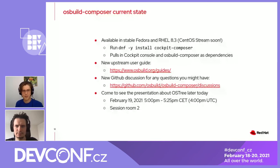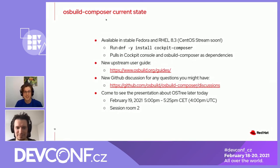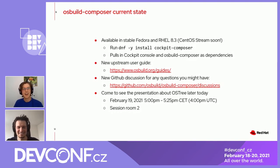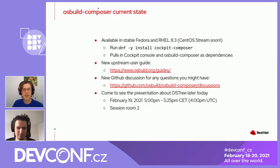We have a GitHub account with discussions and issues. If you feel like we are missing a feature, just go there and tell us, because we are interested in what you need. There will also be a talk about building Fedora IoT trees at 5 p.m. today in session room 2 — Martin and Christian will be speaking there. Fedora IoT is the thing of the future, so go see how we are assembling those images.